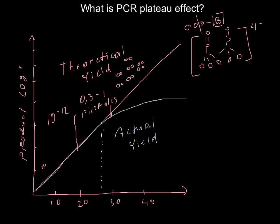With each additional cycle beyond the plateau, we get more and more byproduct that contaminates our sample. The second reason for the plateau effect is degradation at the high temperatures above 90 degrees Celsius — both the enzymes and the dNTPs degrade, so the enzyme works less and less effectively with each cycle.